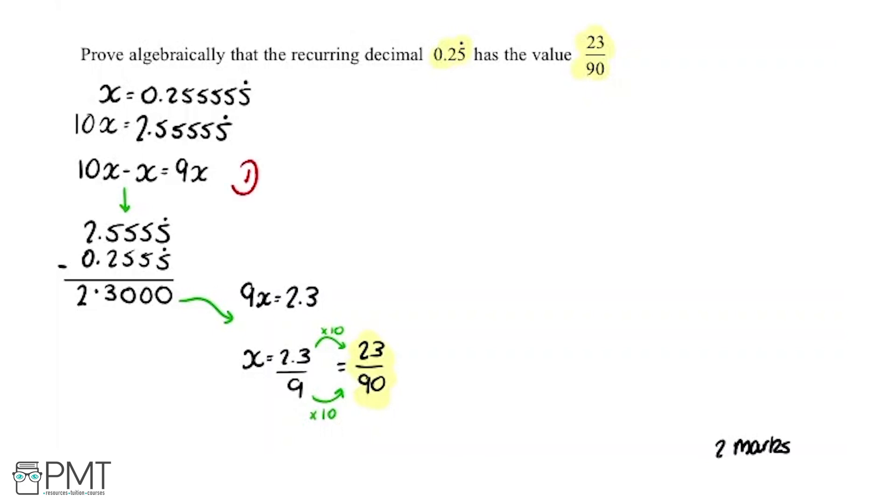We get one mark for this working up here, essentially setting our recurring decimal to a variable and working out what number we need to times that by to be able to subtract them to get down to a number that isn't recurring. And then we get our second mark for having gone through that process and getting to the correct answer that we need to show, 23 over 90.